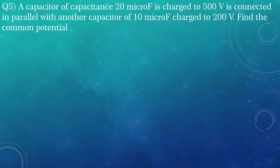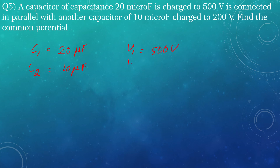A capacitor of capacitance C1 is 20 microfarad, C2 is 10 microfarad. C1 is charged to 500 volt, C2 is charged to 200 volt, and we have to find the common potential.